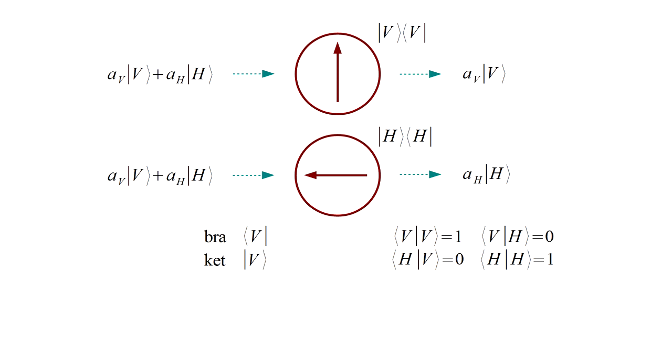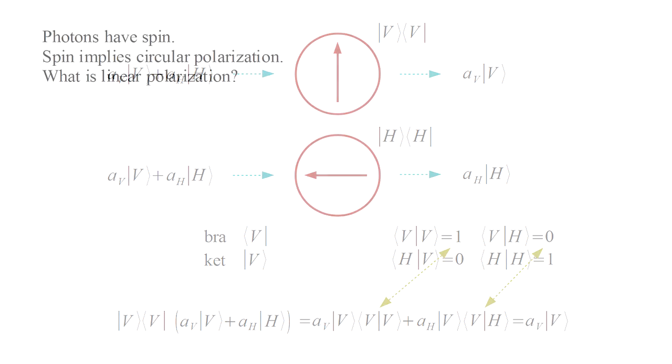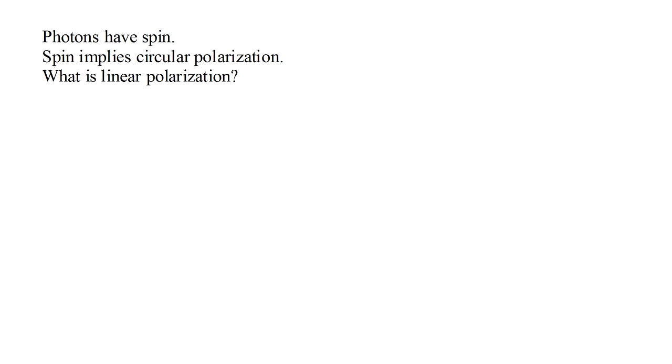We can represent the v oriented filter as an operator composed of a v ket followed by a v bra, and the h oriented filter as an operator composed of an h ket followed by an h bra. The top experiment is mathematically described as applying the v ket v bra operator to the quantum state of the incident field. Applying the v bra to the two terms of the quantum superposition and substituting the appropriate one and zero projection values, we obtain the output quantum state of the v component of the input state.